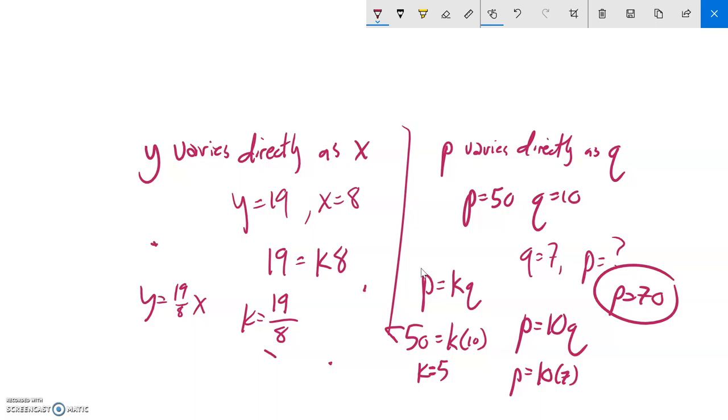All right, there's direct variation. It's just like what you already know about linear equations. The only caveat is that the y-intercept is zero.